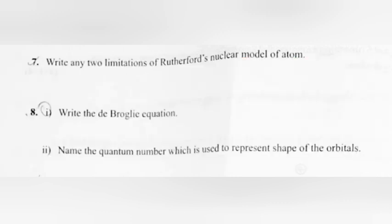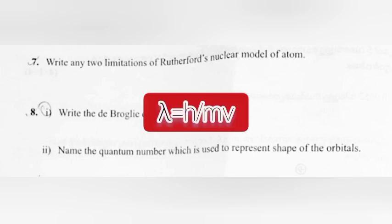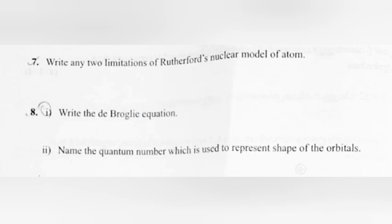Question 8: 1. Write the de Broglie's equation. Answer: Lambda is equal to H by MV. 2. Name the quantum number which is used to represent shape of the orbitals. Answer: Azimuthal quantum number or orbital angular momentum quantum number.